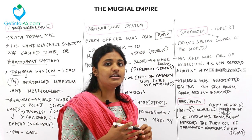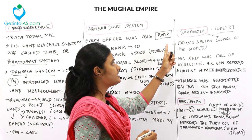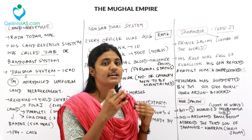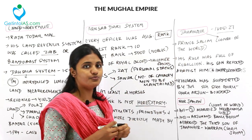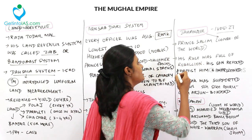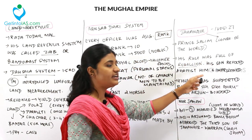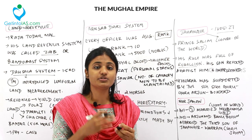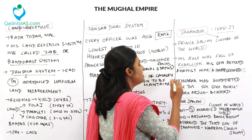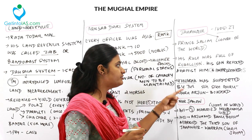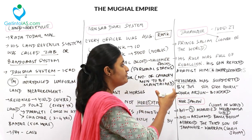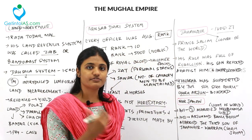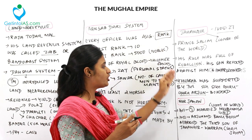Jahangir ruled from 1605 to 1627. He was known as Prince Salim; Jahangir means 'conqueror of the world.' His rule was full of rebellions — his son Khusrau revolted against him, was imprisoned, and reportedly had his eyes put out. Khusrau was supported by the fifth Sikh Guru, Guru Arjun Dev, whom Jahangir captured and executed (beheaded).